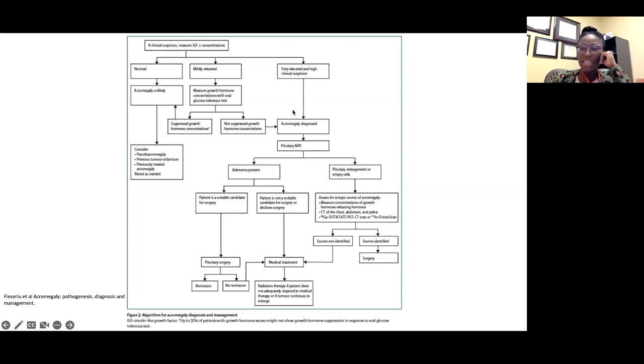If it's not suppressed, they end up getting a pituitary MRI. This is where we catch them as neurosurgeons. Sometimes the endocrinologist diagnoses acromegaly, orders the pituitary MRI, and gives us a heads up. Other times they wait for the MRI result, and once they've confirmed the lab findings, they send them our way.